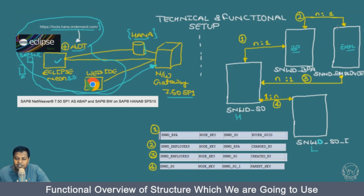Now let's look at the relationships between the tables. There is an N-to-one relationship from employee to business partner — the employee basically maintains the business partner record. The key relationship is node key in the employee table and 'changed by' in the business partner. Similarly, there is an N-to-one relationship from the sales order header to employees via 'created by' in the header and node key in the employee table — multiple sales orders can be created by one single employee.